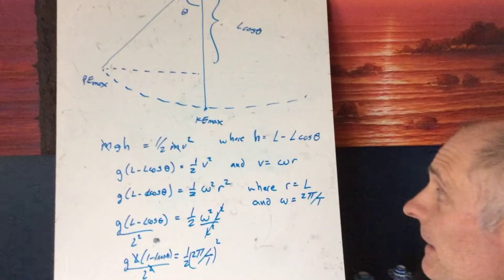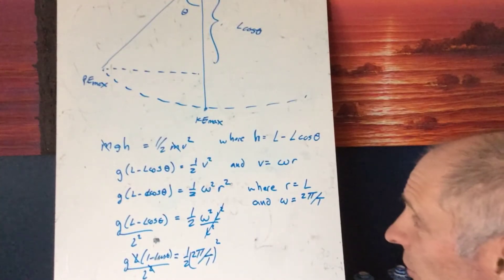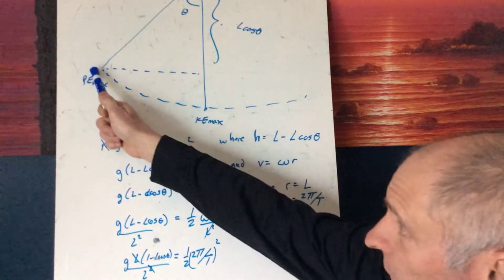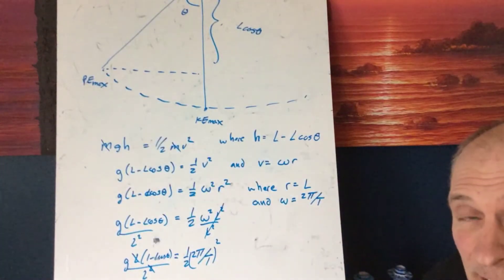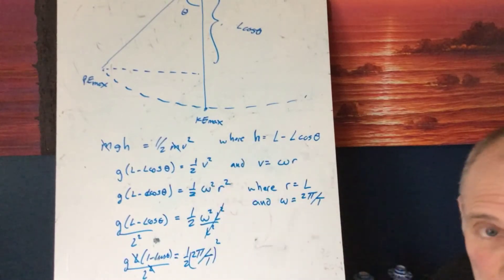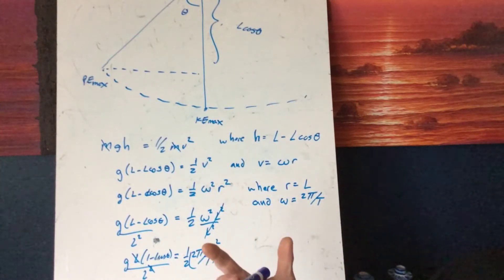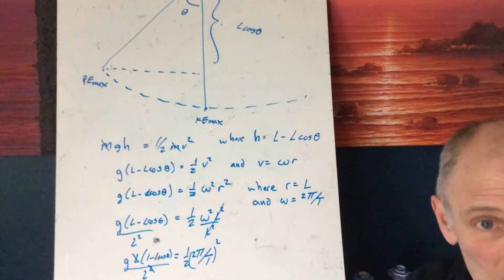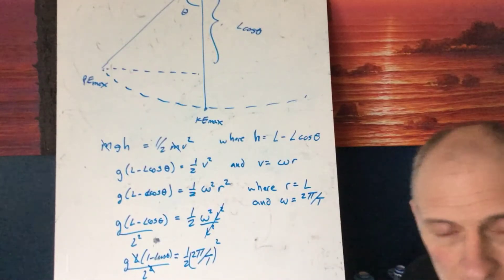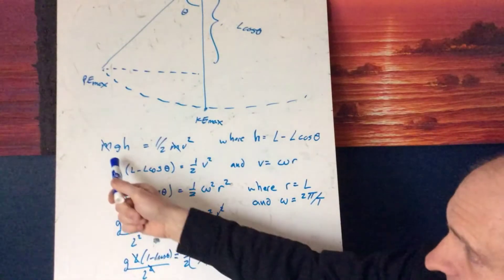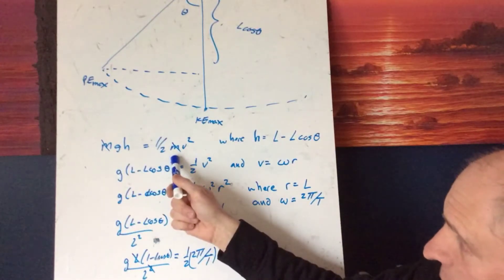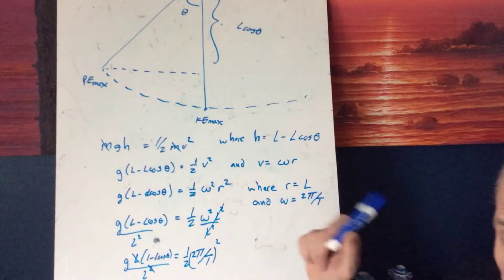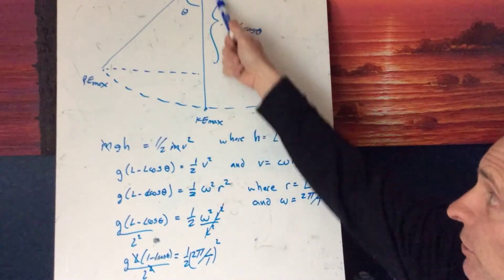Let me take you through this energy approach that sums up what we're doing here. You've got this pendulum — over here you've got a PE max, and a KE max at the bottom. The swing actually goes from here out to here and then back again — that's one cycle. We're taking an energy approach: you have MGH equal to one-half MV squared, where H is L minus L cosine theta.